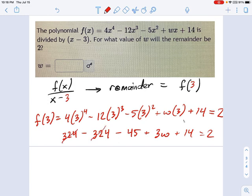And negative 45 plus 14 turns into negative 31 equals 2. So that means 3w equals, add 31 to both sides, we get 33, and w equals 11.